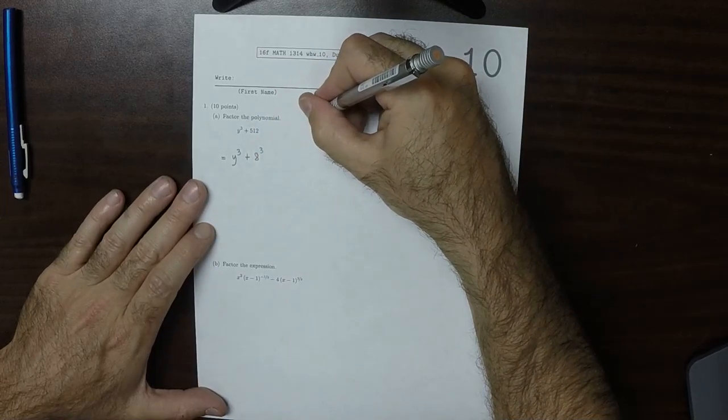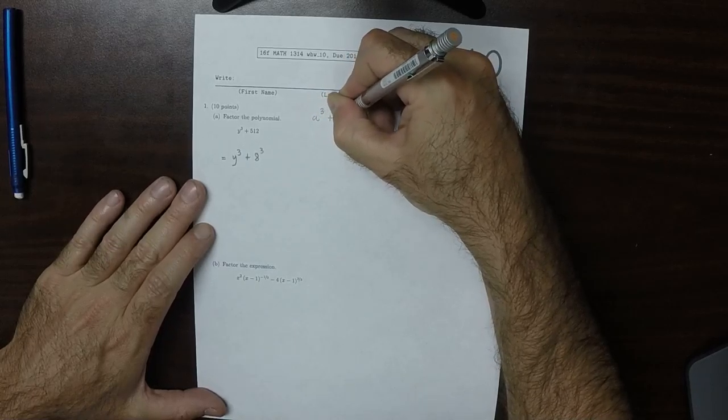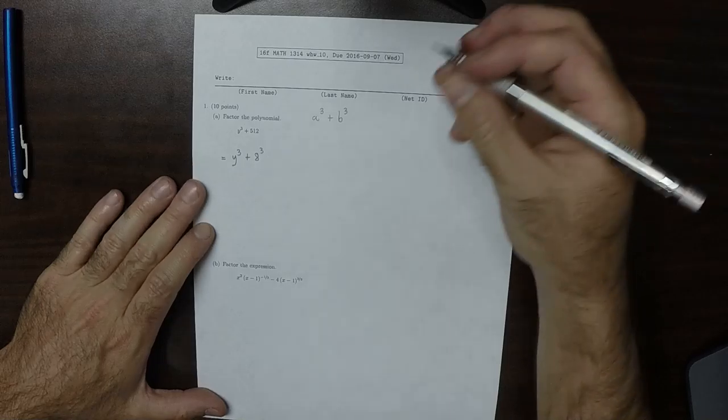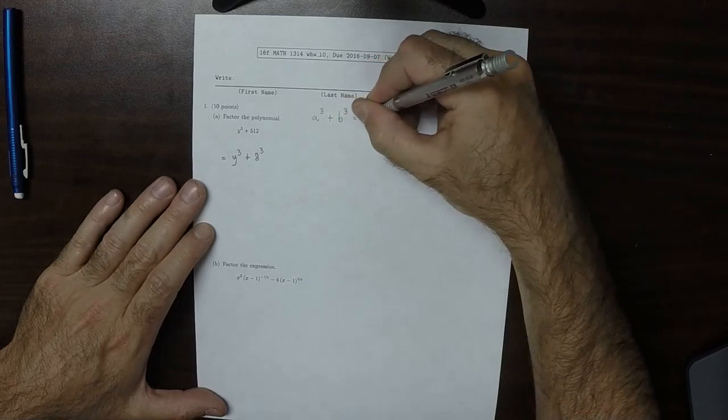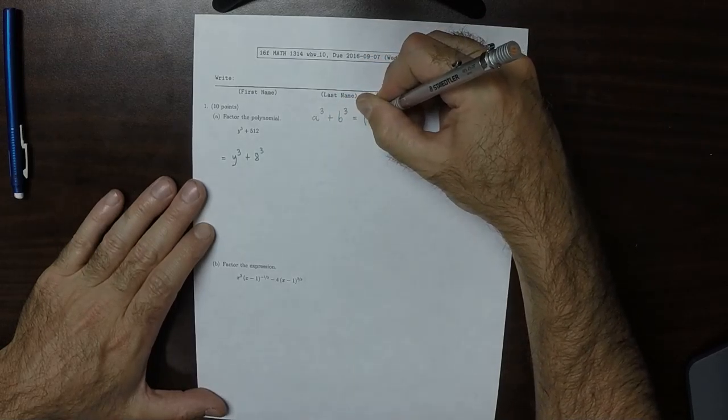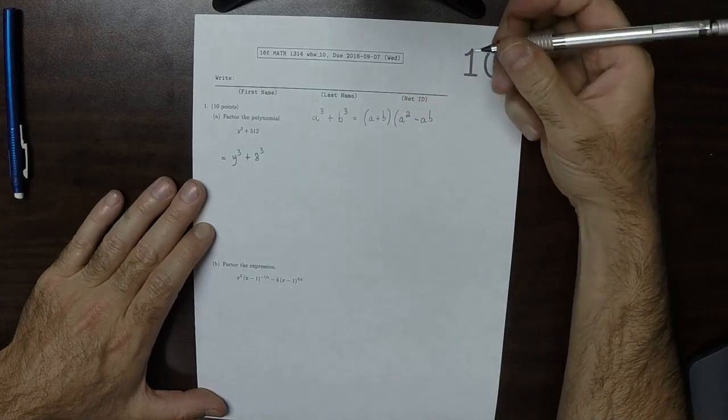One of the formulas you are expected to memorize is that a³ plus b³ factors in the following way: it factors as (a plus b) multiplied by (a² minus ab plus b²).